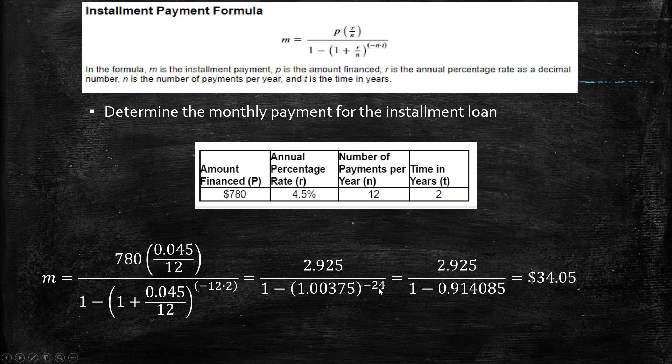negative 12 times 2, which is negative 24 as an exponent. Then finally I took this in parentheses and raised it to the negative 24, and finally got my final answer. So it just takes a couple of steps to actually do these, but the formula is pretty straightforward once you get everything plugged in.